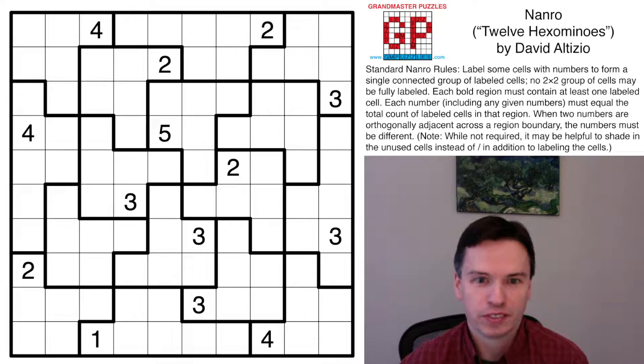So we're here to solve this NANRO by David Altizio called 12 hexaminoes, and paired with those 12 hexaminoes look to be four heptaminoes, so overall 100 cells taken.